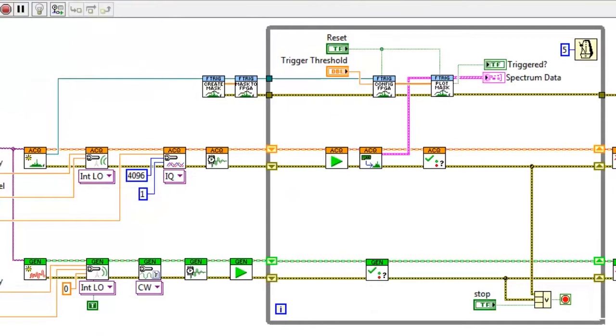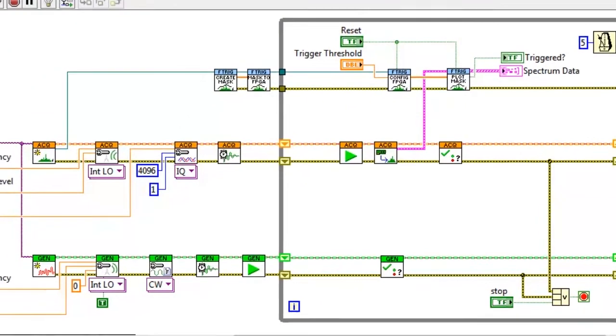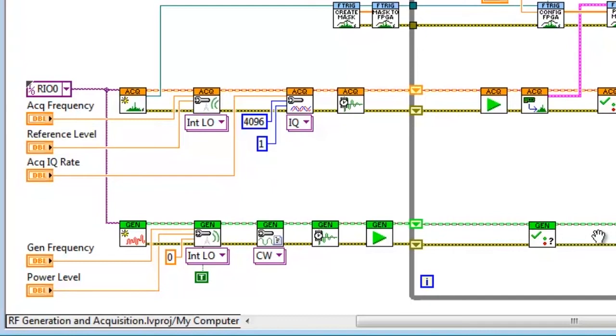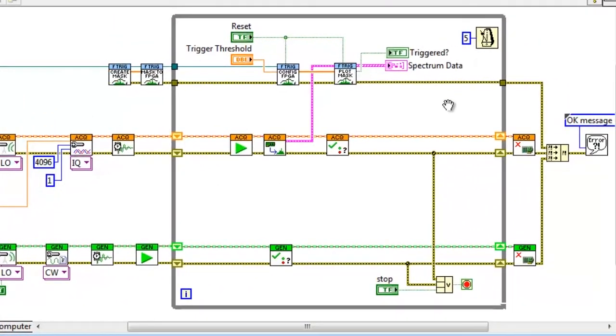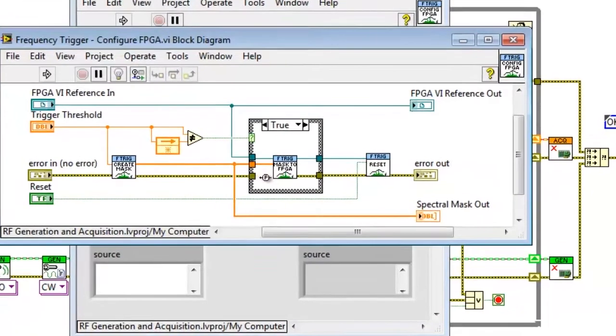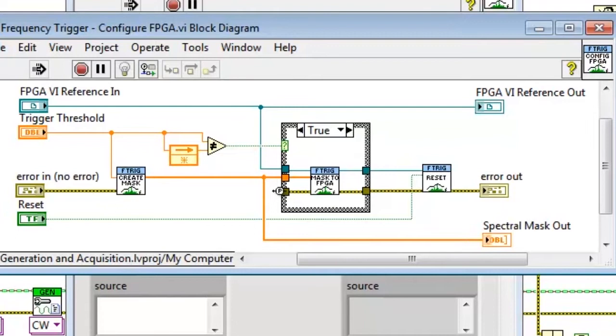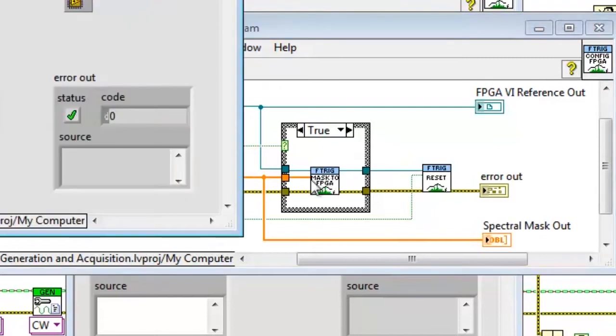So let's take a look at how this is implemented in LabVIEW FPGA. First, we'll take a look at my host block diagram. We see that on the bottom half of the screen is where the generation is being done, and the middle section of the block diagram is where the acquisition is being done. And here on the top part of the block diagram is where I've implemented the frequency domain trigger. This VI in particular is where we're downloading the spectral mask to the FPGA onto memory that we've allocated specifically for it. So let's dig down into this code and see what's exactly going on.